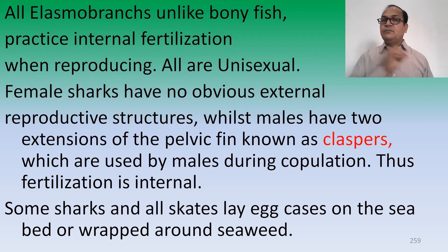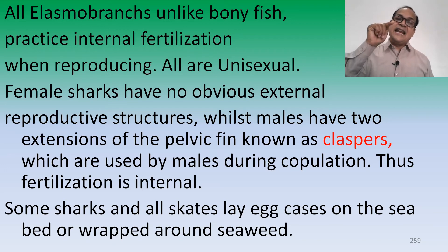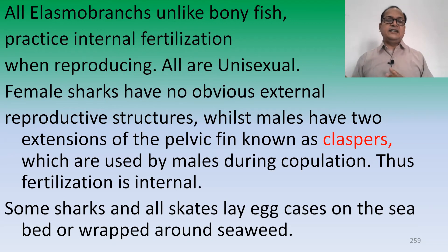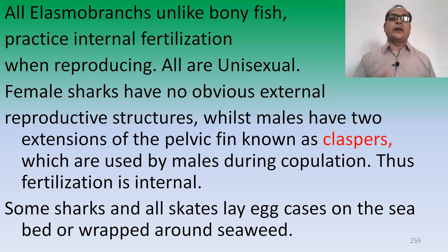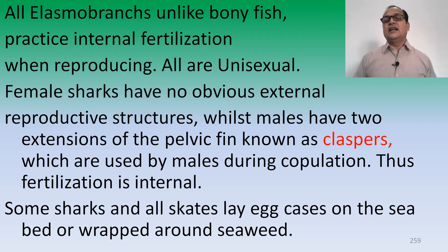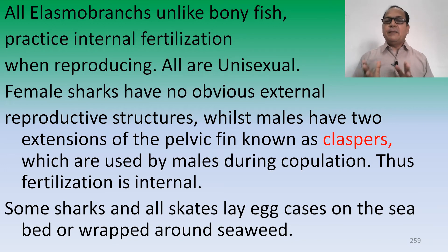Internal fertilization is an important and advanced character found in cartilaginous fishes, more so than in bony fishes. All elasmobranchs are unisexual. Female sharks have no obvious external reproductive structure, while males have two extensions of the pelvic fin known as claspers, which are used during copulation. The fertilization is therefore internal.